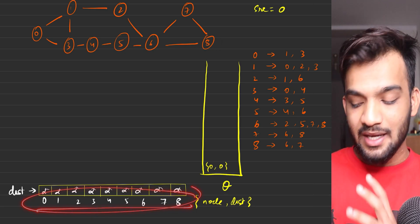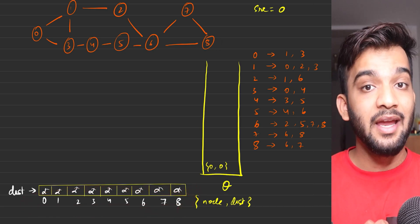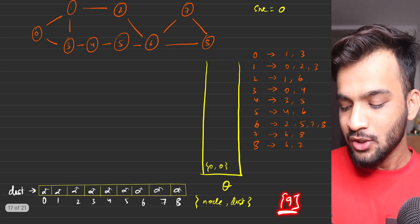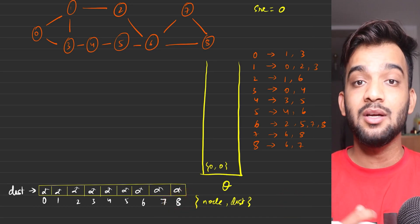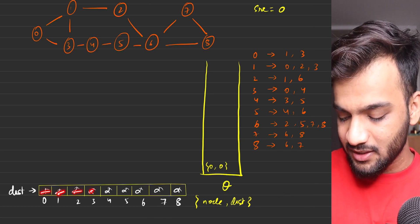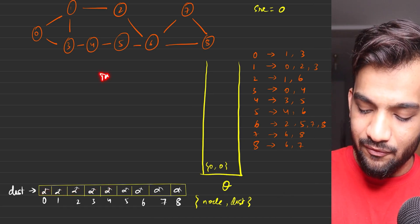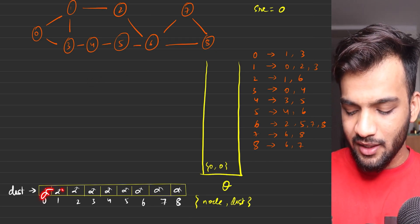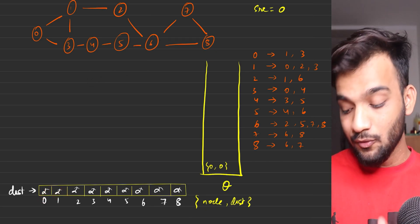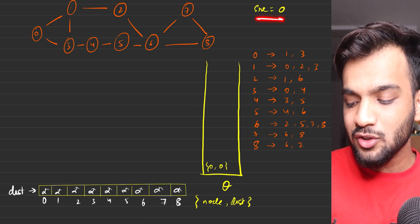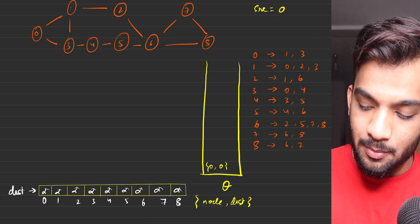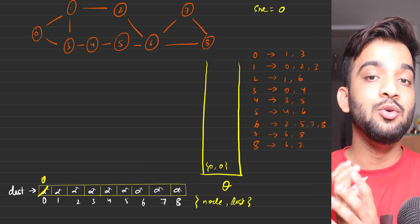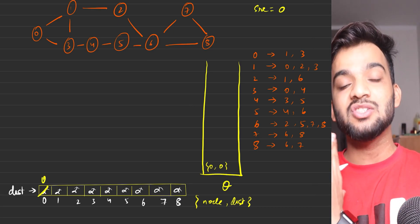All positions in the distance array should be filled with infinity — a very large number that cannot be a valid answer. Whatever source you start with, assign it distance zero, overwriting the infinity value.